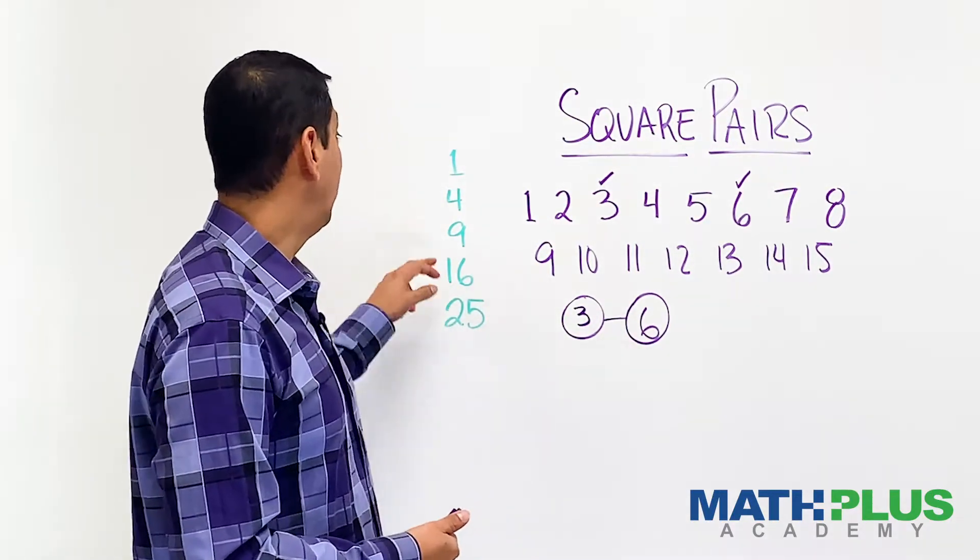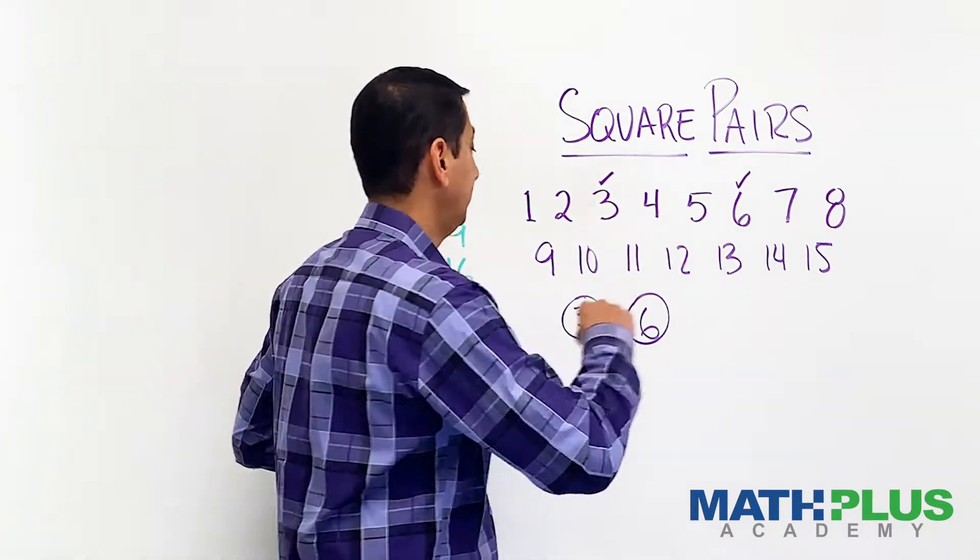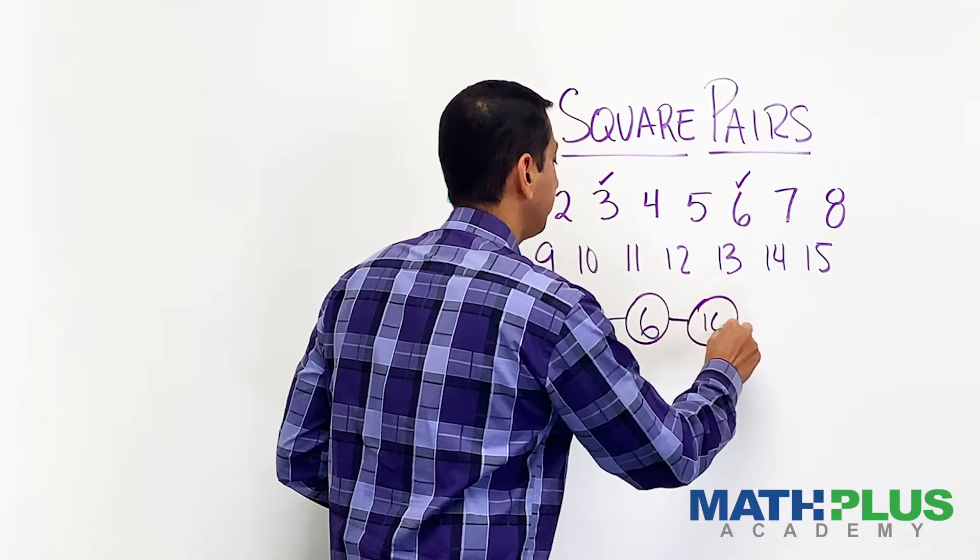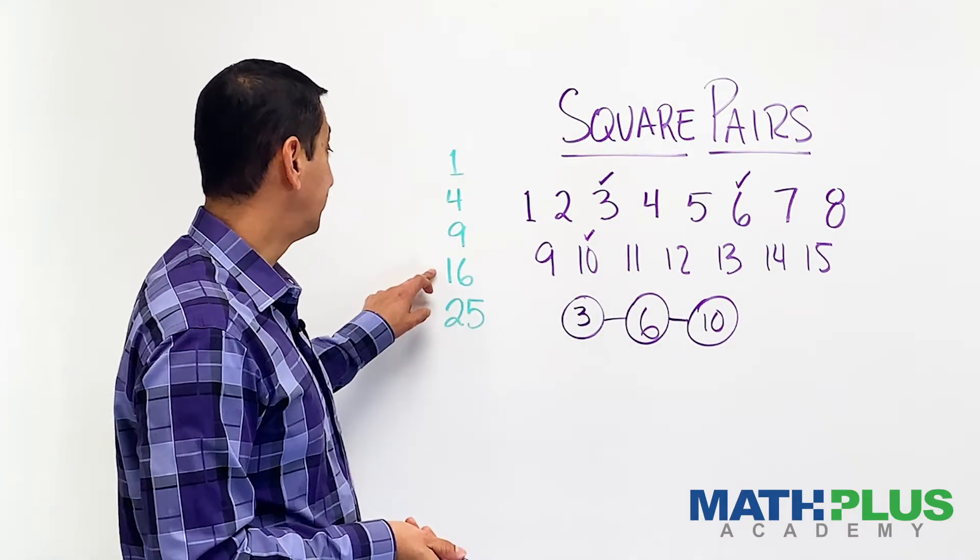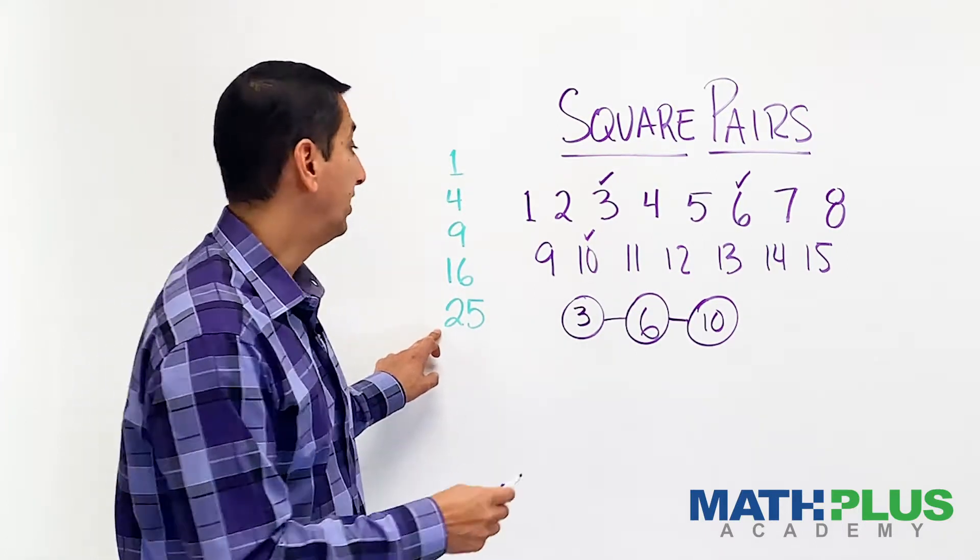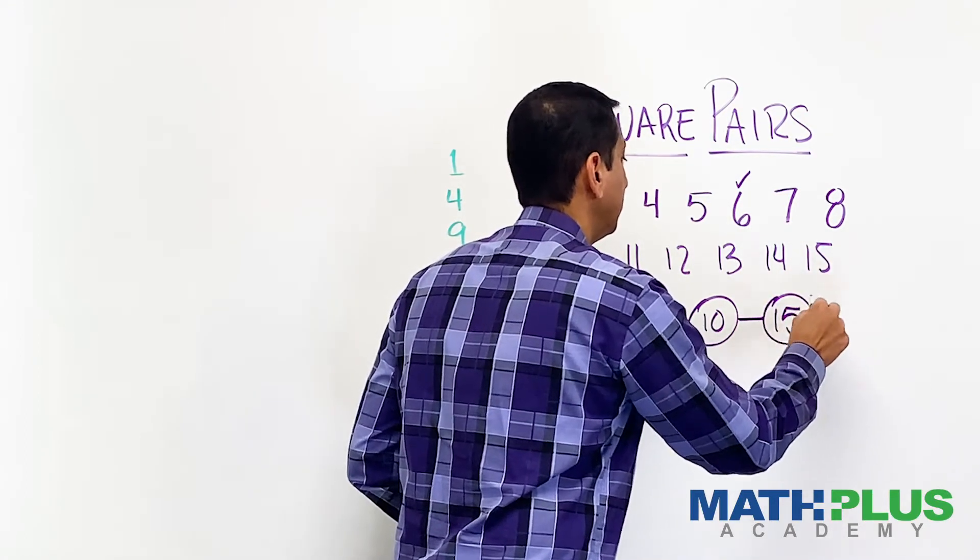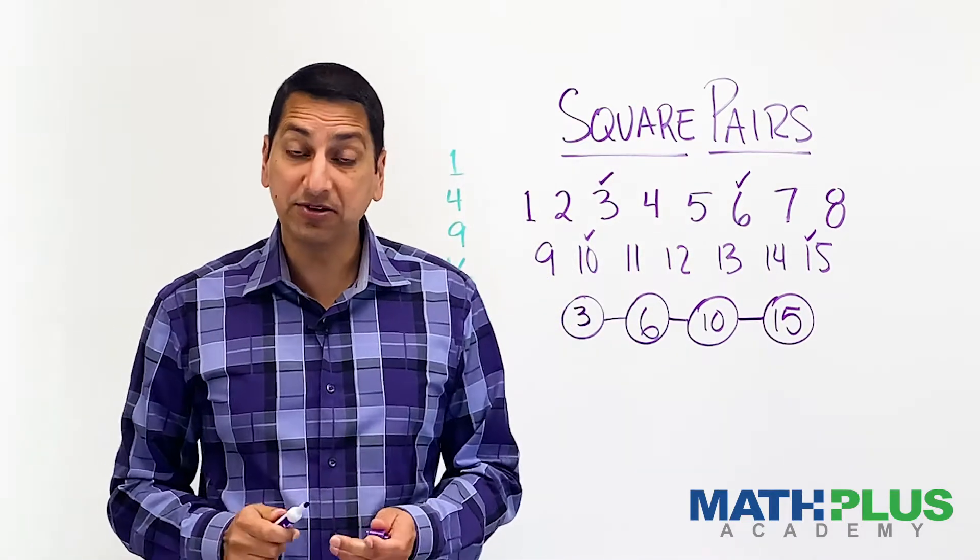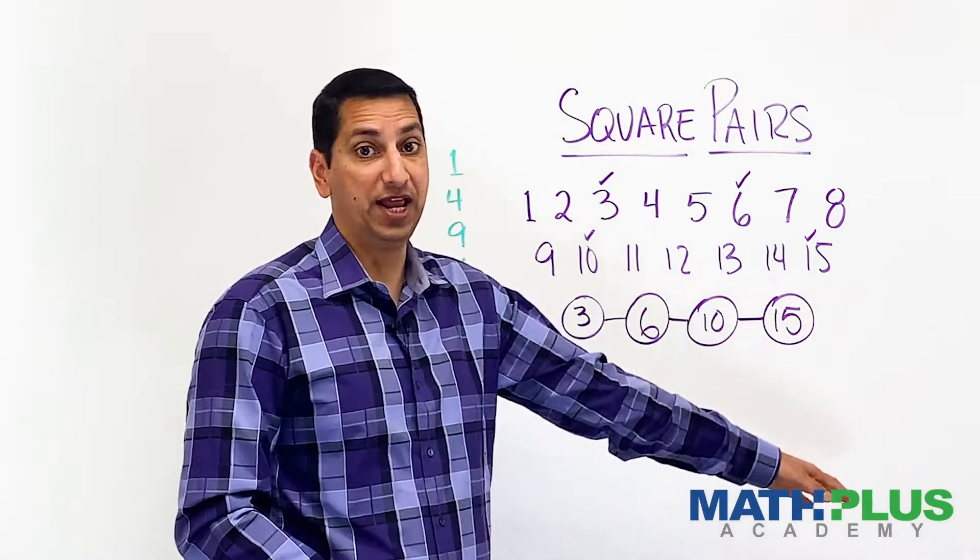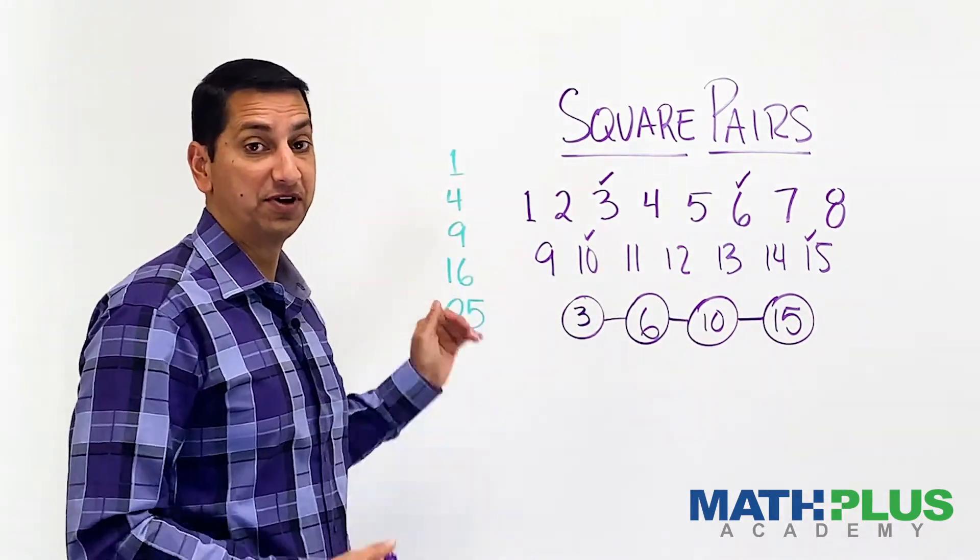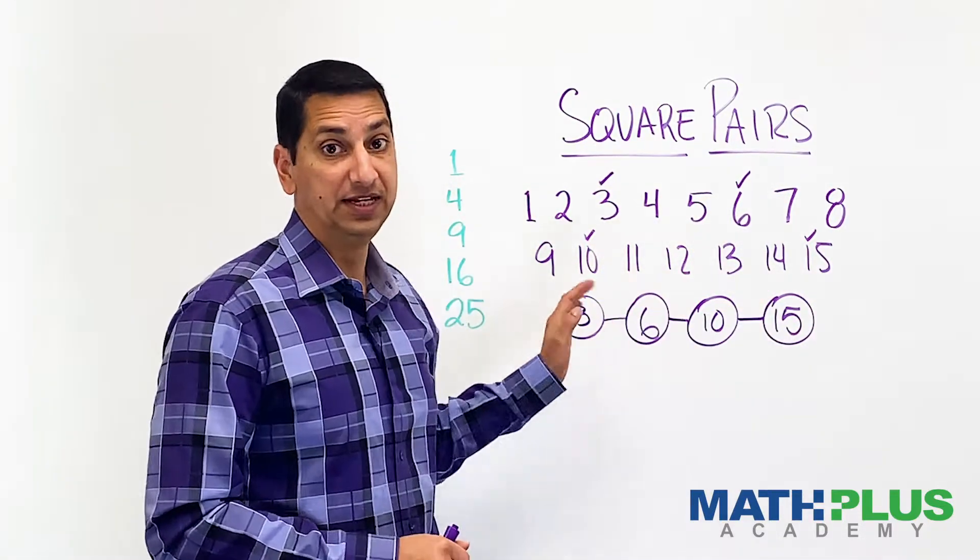Okay, what can I pair with six? Well, I've already paired it with three to make nine. Now I could pair it with 10 to make 16. So let me do that. Now what can I pair with 10? I could pair it with six, which I've already done. I can pair it with 15. So I could put 15 next. And I'm done with the 15. So now you see how this problem works, how this challenge works. You're trying to create this chain where every pair adds up to one of our square numbers. Keep going as long as you can. The goal is to use all 15 numbers.